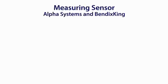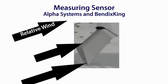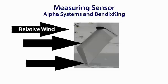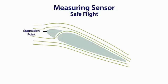The probe used in the Alpha Systems and Bendix King devices has two ports, each intaking ram air and sending it to the processing unit. The processor then calculates the difference in ram air pressure between the two ports to determine the direction of the relative wind. The Safe Flight device has a tab on the leading edge of the wing that is moved by the relative wind to sense the stagnation point, then sends this information to the device in the cockpit to be displayed to the pilot. The precision of the device and its calibration is what allows it to measure the direction of the relative wind.